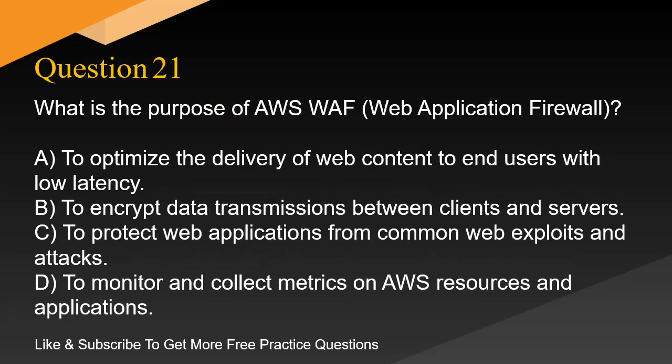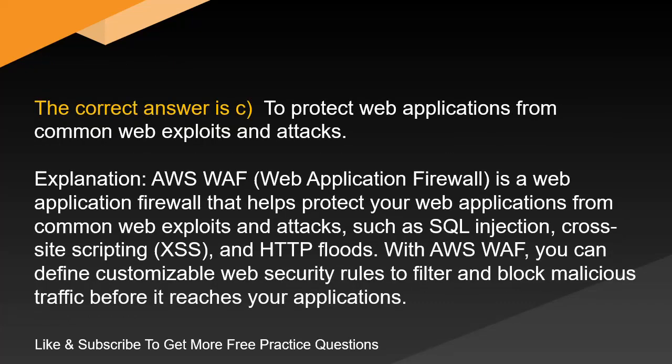Question 21. What is the purpose of AWS WAF, Web Application Firewall? A. To optimize the delivery of web content to end users with low latency. B. To encrypt data transmissions between clients and servers. C. To protect web applications from common web exploits and attacks. D. To monitor and collect metrics on AWS resources and applications. The correct answer is C: To protect web applications from common web exploits and attacks.